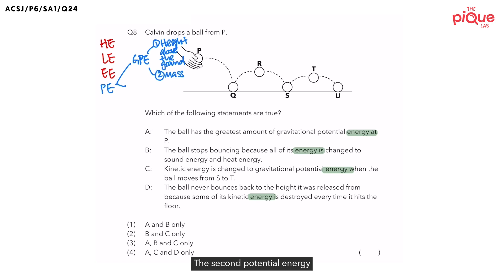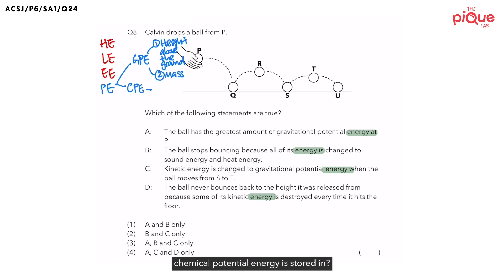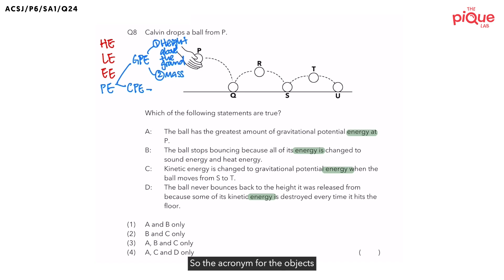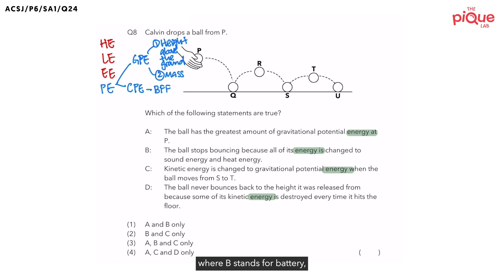The second type of potential energy is chemical potential energy. Do you know where chemical potential energy is stored? Think about this — what do you call your best friends? You call them BFF, right? So the acronym for objects that possess chemical potential energy is BFF: B stands for battery, F stands for food, and the last F stands for fuel.